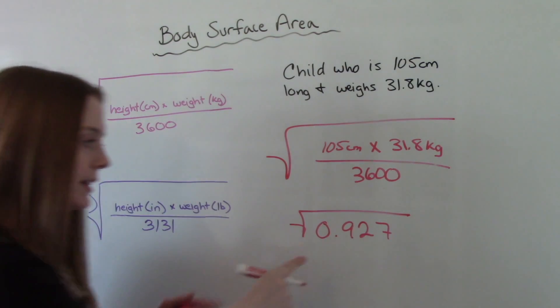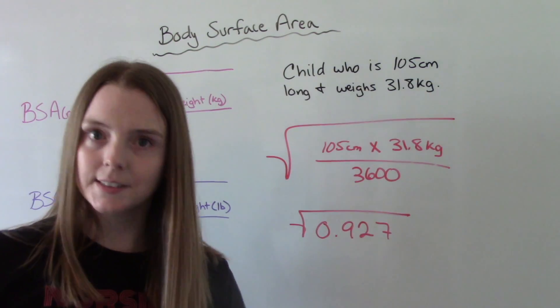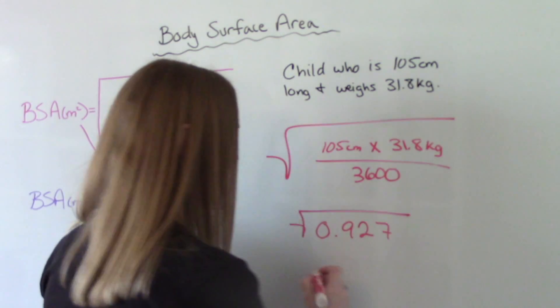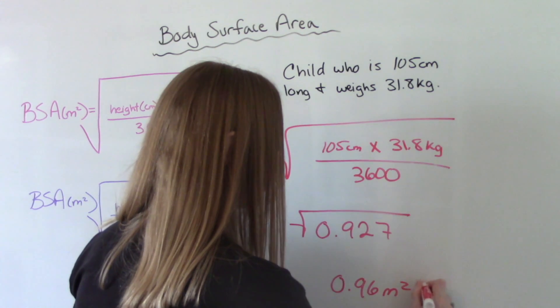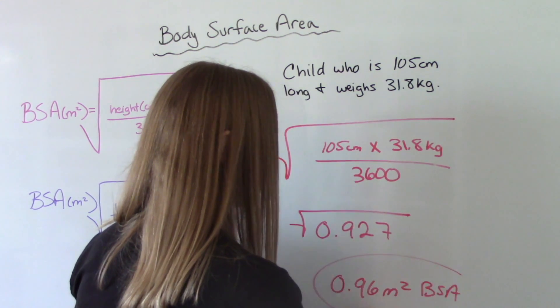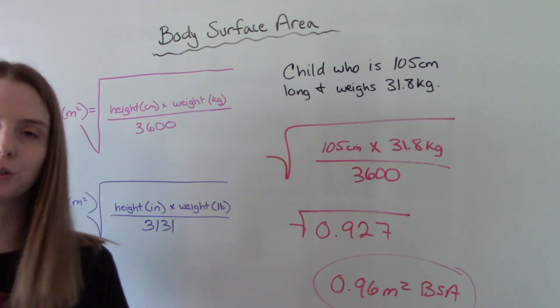When we do that, we get the square root of 0.927. And then when we put this in our calculator to figure out what is the square root of 0.927, we get 0.96. So this is our body surface area. This is the answer to our question.